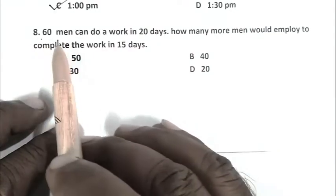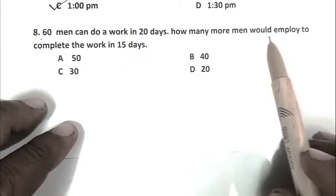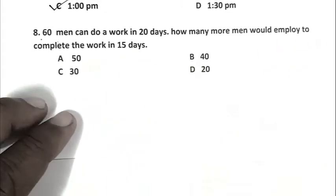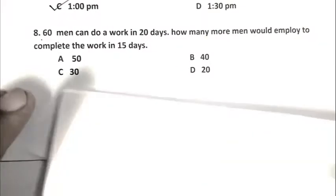Question number 8: 60 men can do a work in 20 days. How many more men would be employed to complete the work in 15 days? We can calculate it using the unitary method.